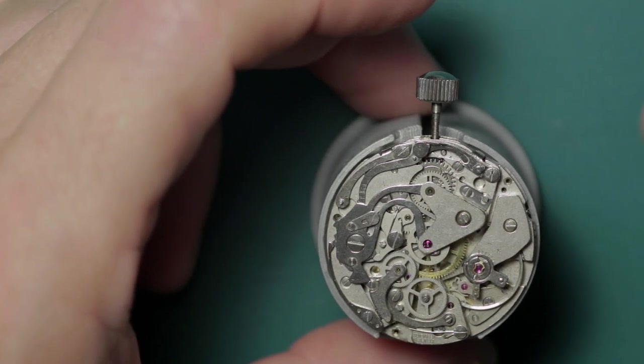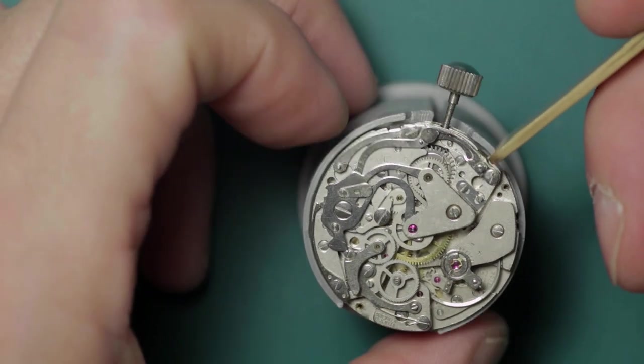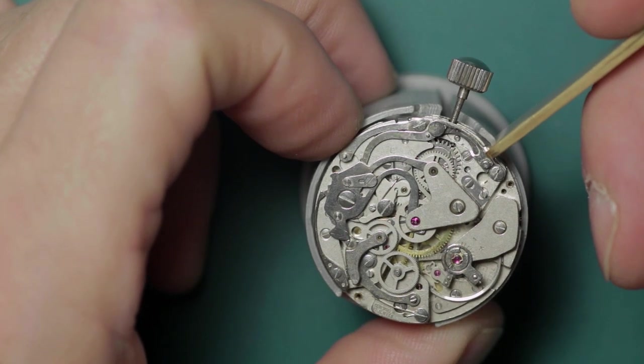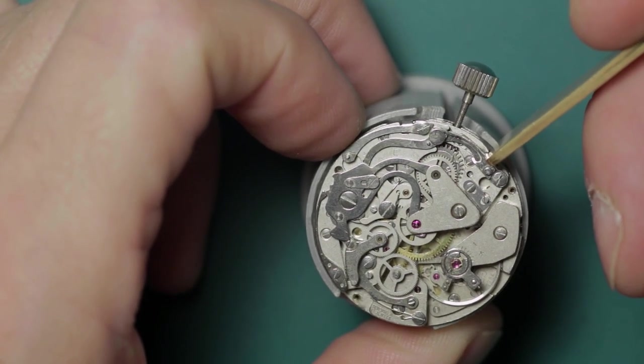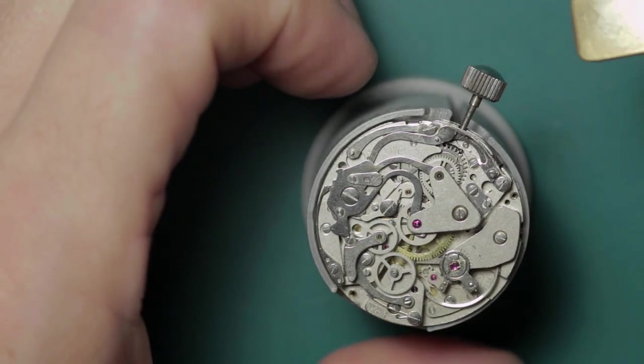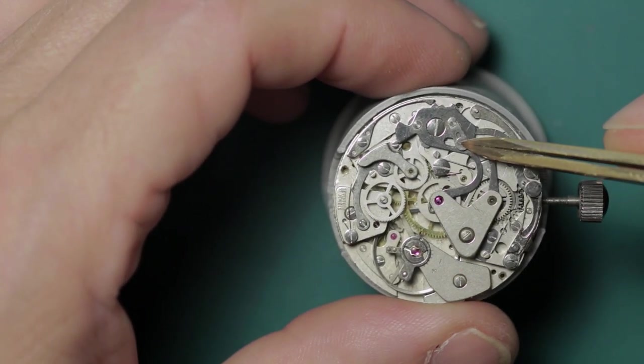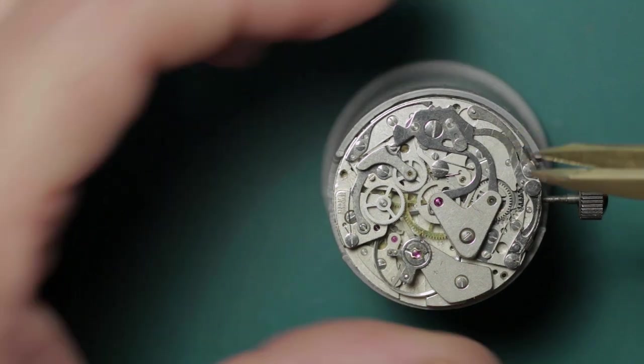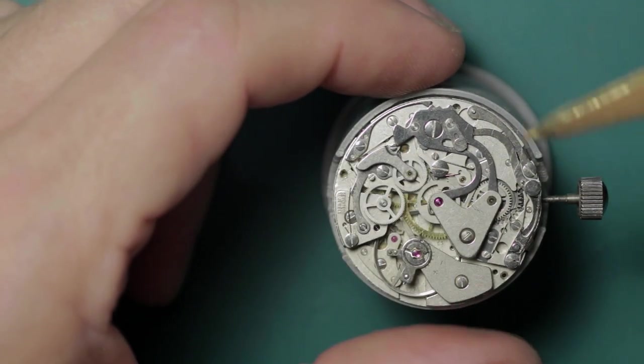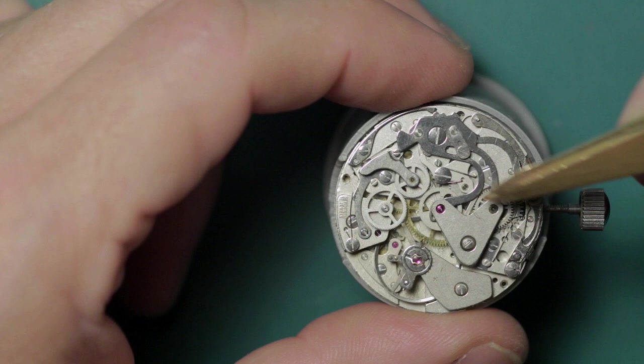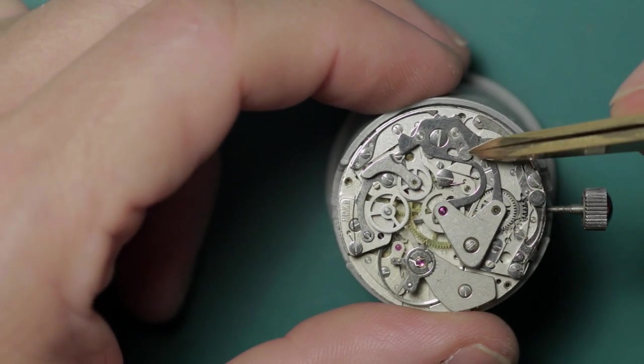The rest of the works are pretty much the same as the Poljot. In terms of construction, I don't believe the Poljot has the adjuster there. This screw here adjusts the actual depth for the contact with the hearts on the chronograph wheels.